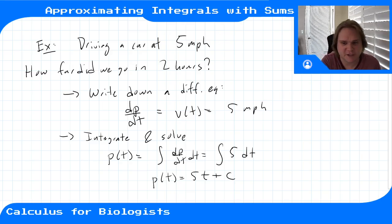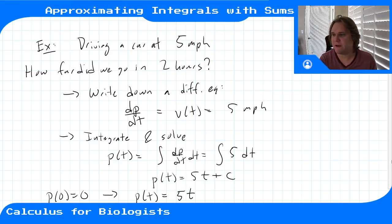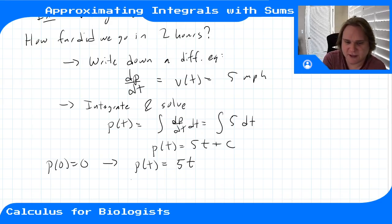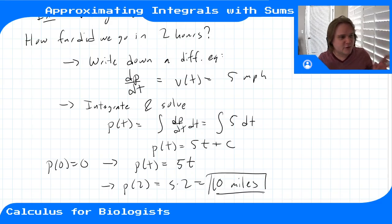Our reference position is p(0) = 0, which tells us C = 0, so p(t) = 5t. The position at time t is five times the amount of time that's passed. To answer how far we go in two hours, we evaluate p(2) = 5 × 2 = 10 miles.